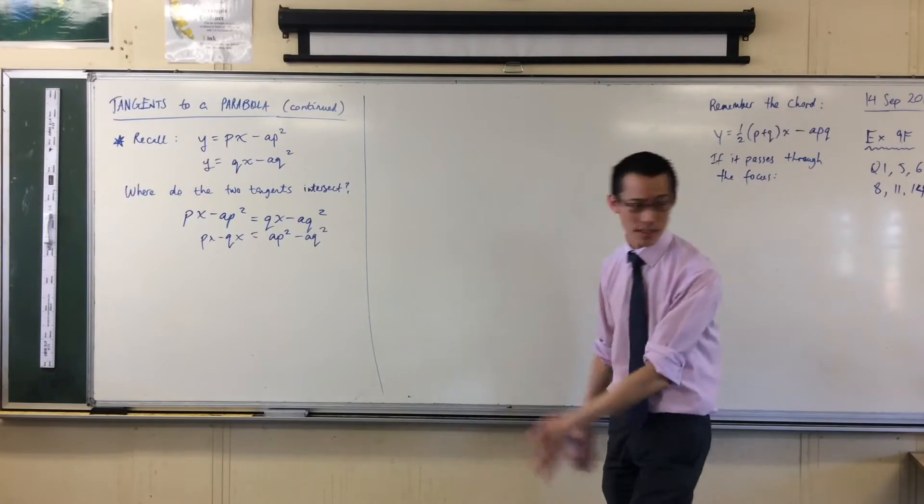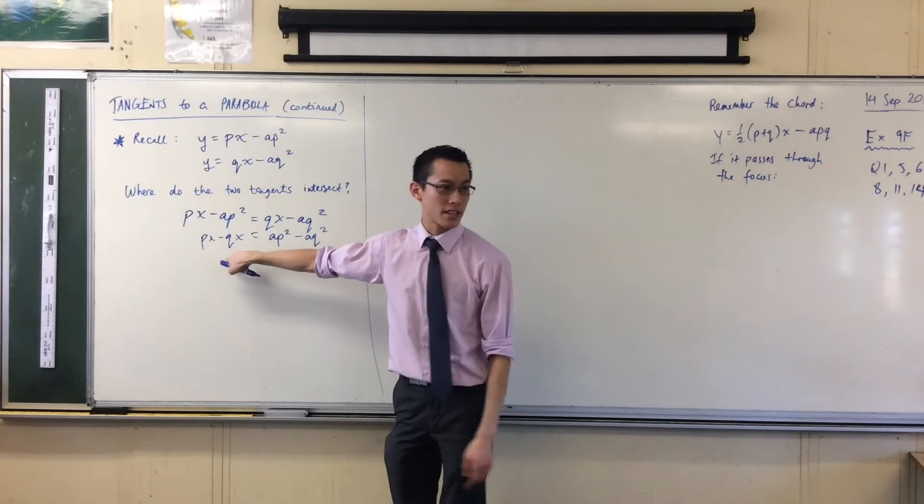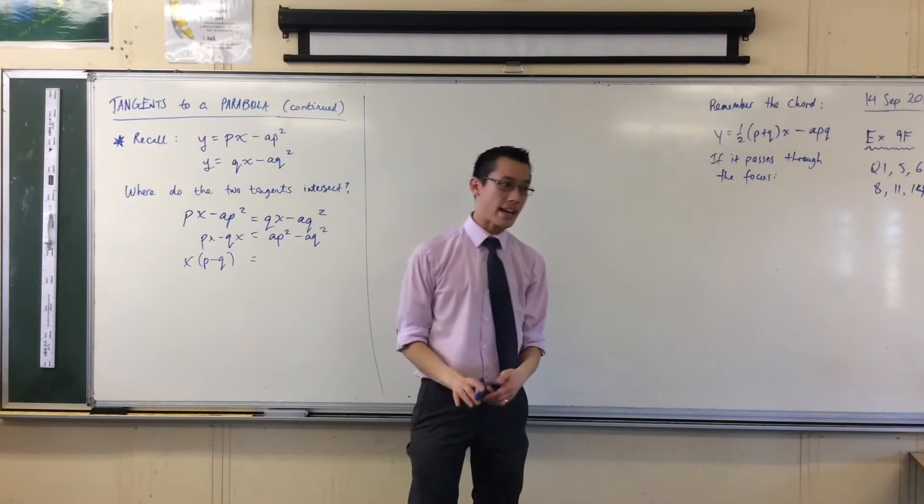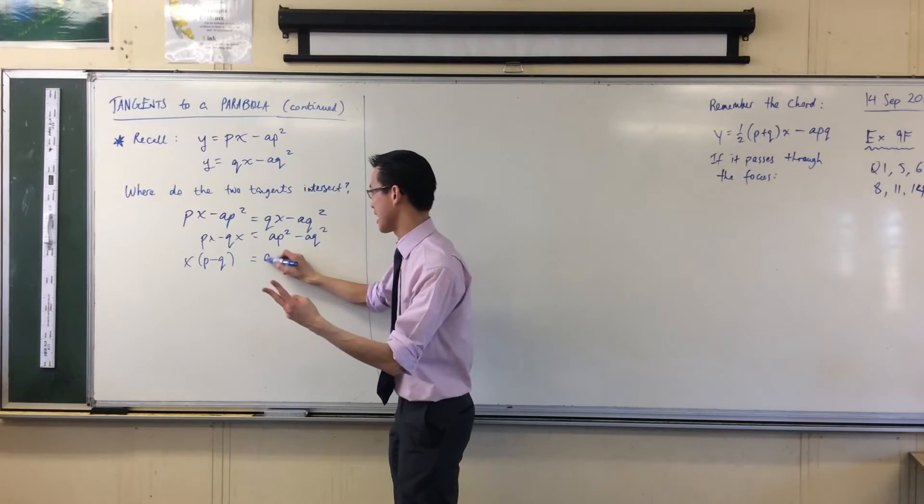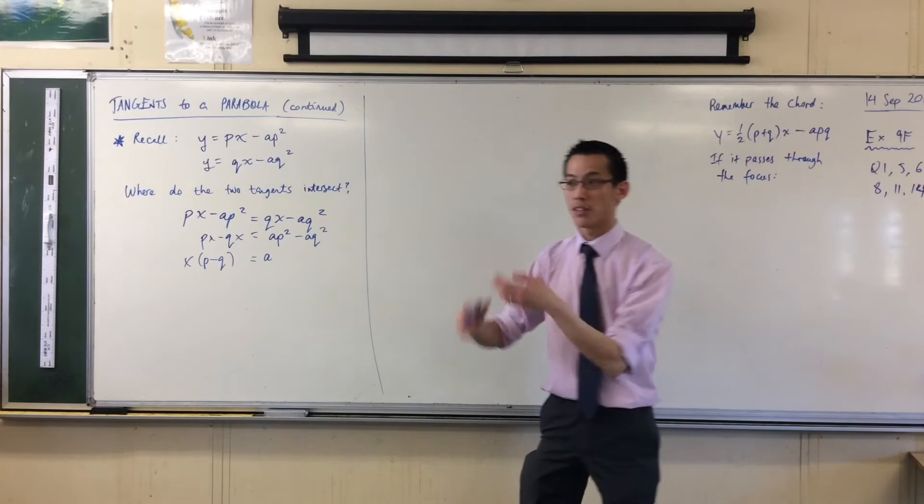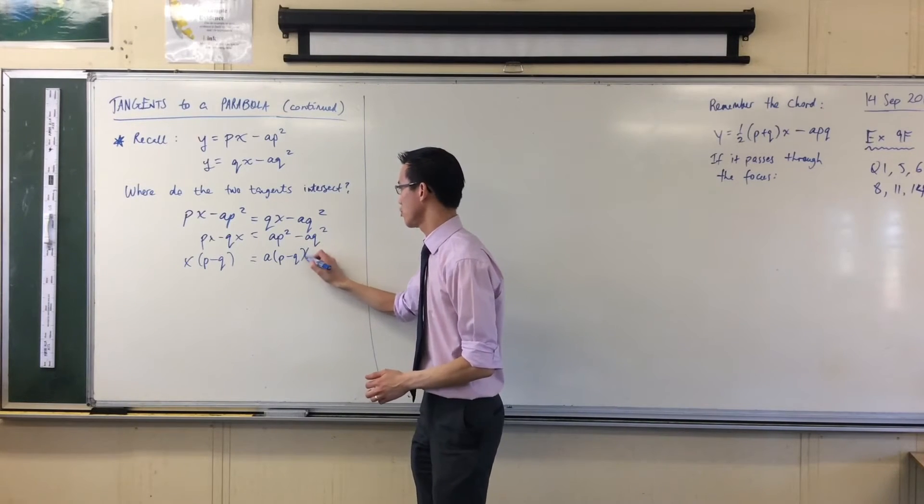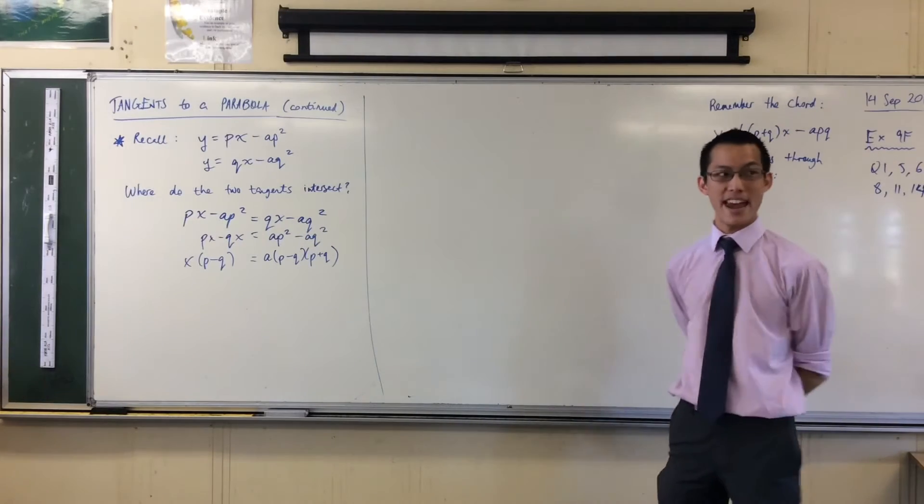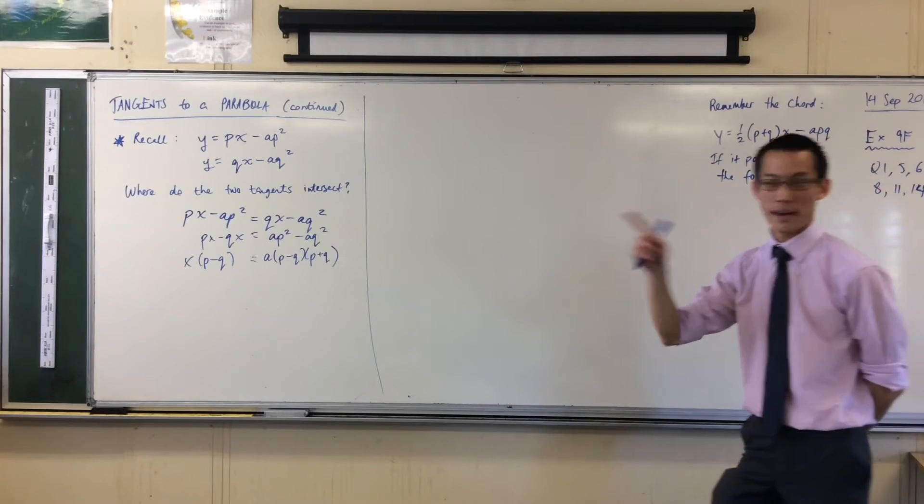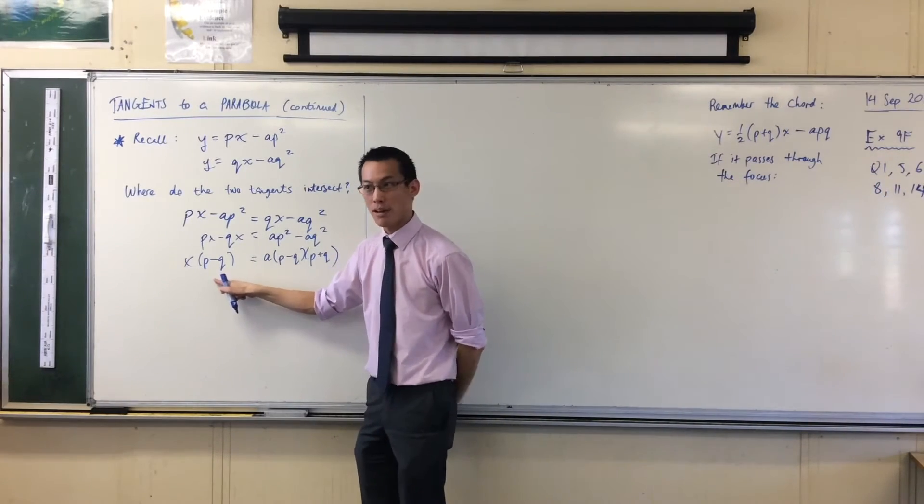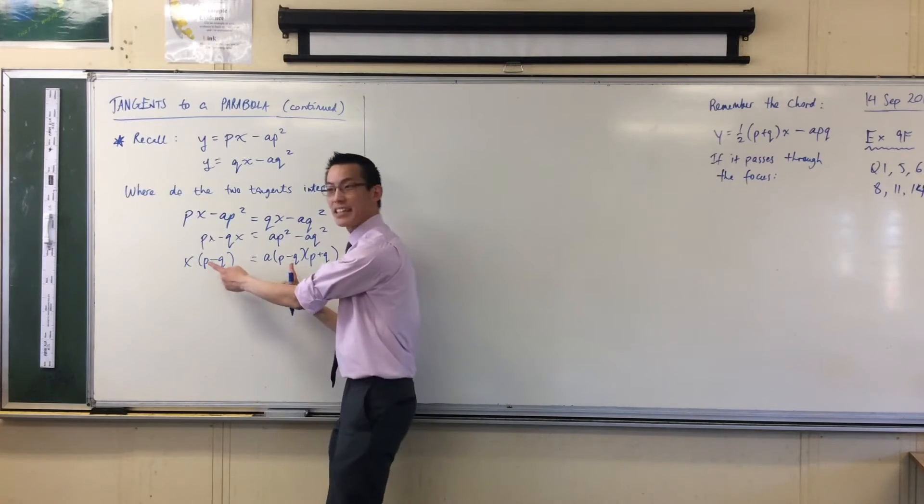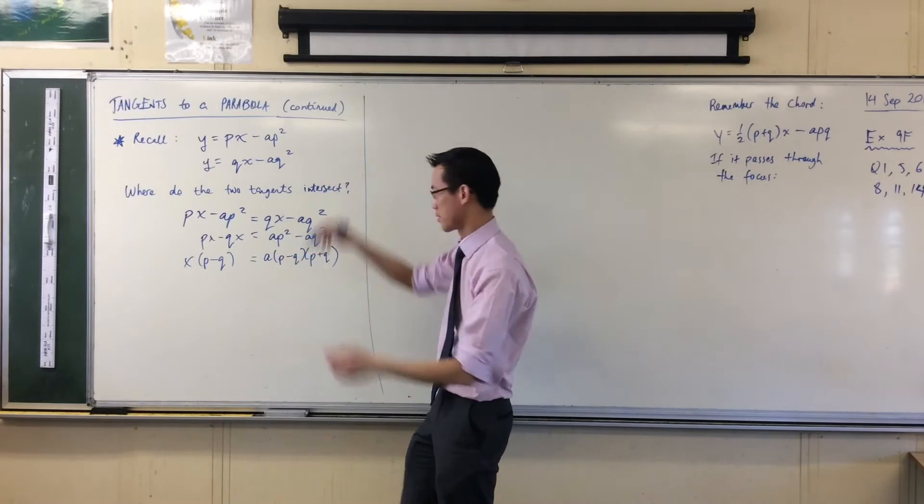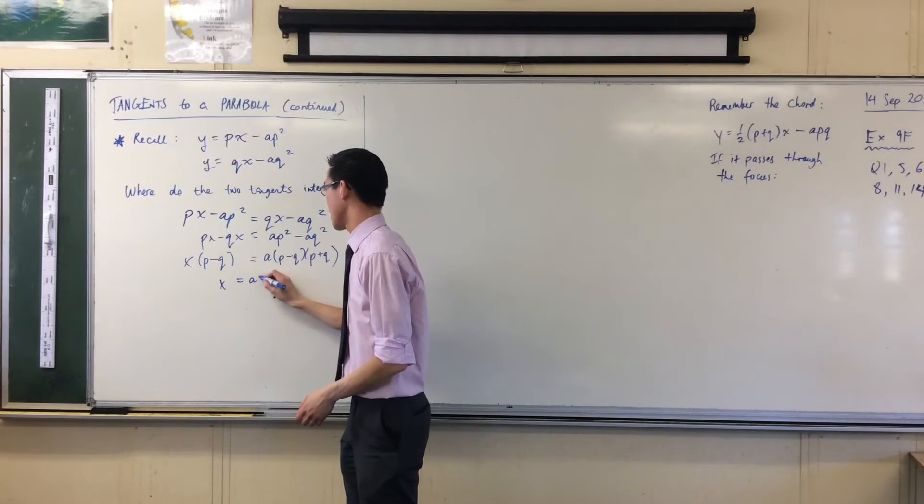Now, I can do a lot with this. There's loads of things to factorize. Over on the left-hand side, I'm going to take out the X. Over on the right-hand side, I can take out the A, and then I can also do the difference of two squares. So I've got P minus Q, P plus Q. Now at this point, I can do some grand canceling. I'm going to cancel P minus Q, and the reason why I can divide both sides by this, is because it's not zero, because P and Q are not the same. They're at two different places. So I'm going to divide through, and I just get left with this.